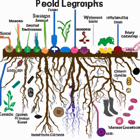Protozoa are tiny organisms in the soil that feed on bacteria and other microbes. Protozoa are essential for soil fertility because they break down the bacteria, which releases the nutrients stored in them. Protozoa also help maintain the balance of microbes by controlling the population of bacteria.